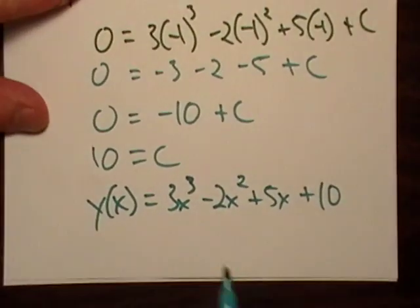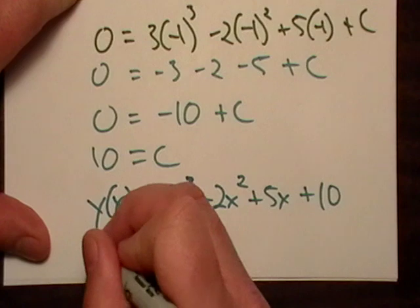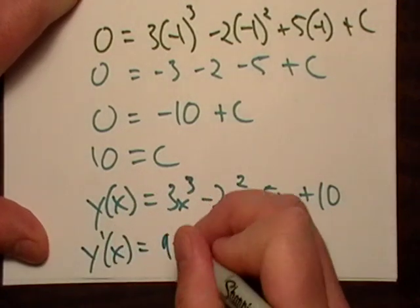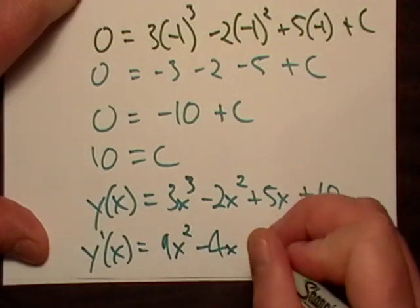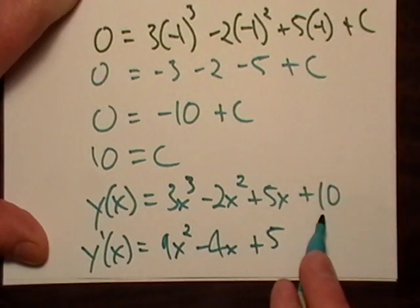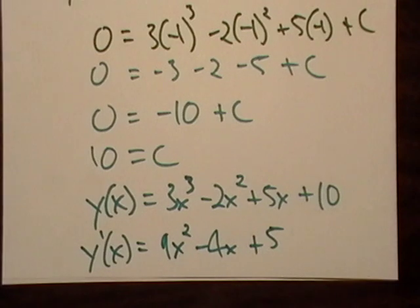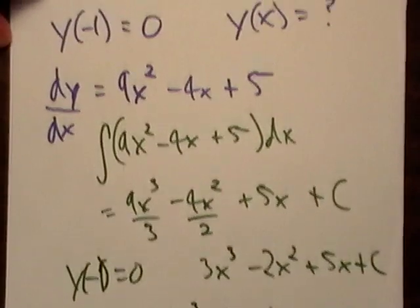So just to test our little theory, let's just go ahead and look for y prime, the derivative. So that's going to be nine x squared minus four x plus five, derivative of the constant is zero. And there's our original guy right there. So that's basically an initial value problem.